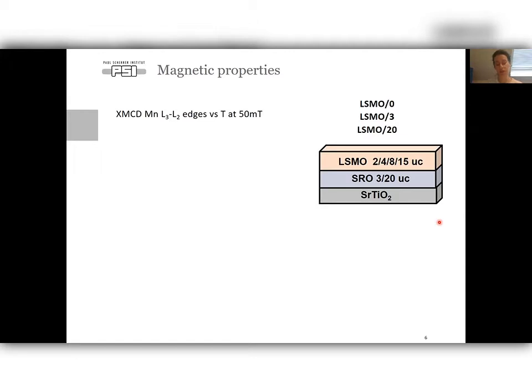When I talk further about experimental results, samples will be labeled as following. First number indicates LSMO thickness, and the second number indicates SRO thickness, and when it is indicated as zero, it means that it's LSMO deposited directly on strontium titanate, so it's a single LSMO film.